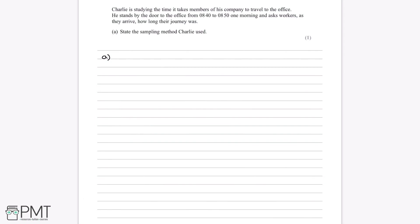Charlie is studying the time it takes members of his company to travel to the office. He stands by the door from 8:40 to 8:50 one morning and asks workers as they arrive how long their journey was. Part A asks us to state the sampling method Charlie used. Charlie waited by the door for the opportunity to ask people how long their journey was — he asked people who happened to be there at the right time, without pre-planning or carefully selecting the sample. So the sampling method Charlie used is called opportunity sampling, or convenience sampling.